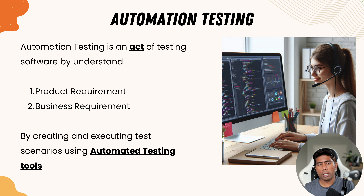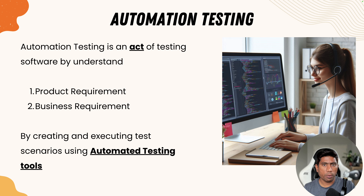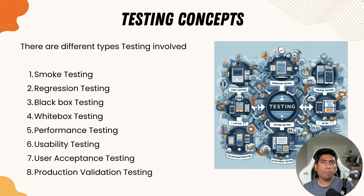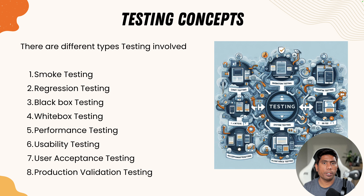A manual test engineer crafts test scenarios for how the application has to be tested. An automation test engineer does the exact same thing but also writes code to make sure the tests can be executed in an automated fashion — not always run manually. That is the real power of automation testing versus manual testing, and there are even more testing concepts we need to understand beyond just these two.